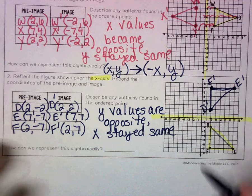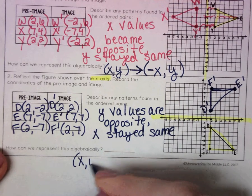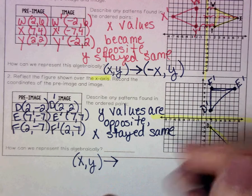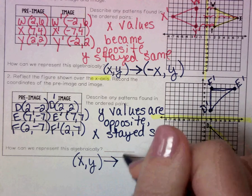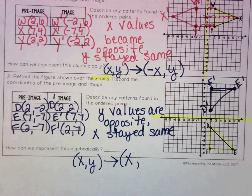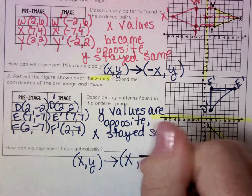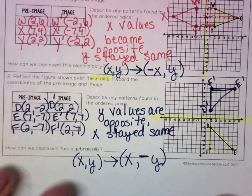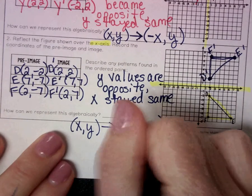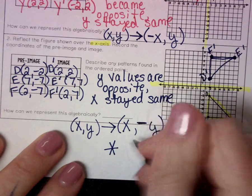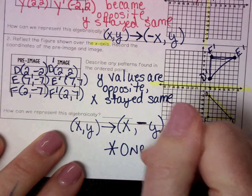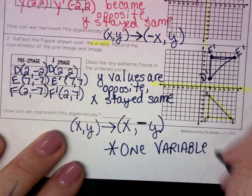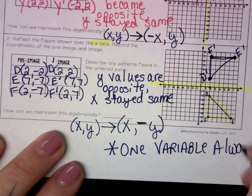And so now when we write our rule (x, y), since our x's stayed the same but our y values change to the opposite, this time we're going to put our negative sign on the y value: (x, -y).